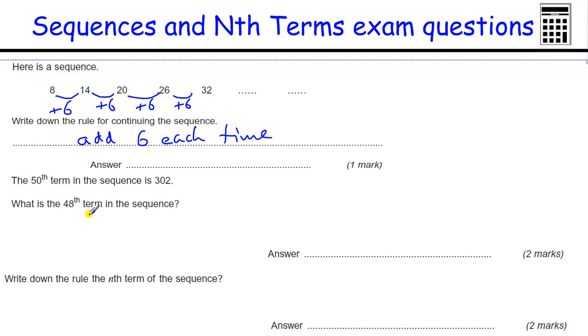The fiftieth term of the sequence is 302. What's the forty-eighth term of the sequence? Well, if I'm starting at 302, each time I'm adding six. So what must I add six to to make 302? That's the same as taking away six to get 296. Take another six off. That's 290. And this is the fiftieth, so this is the forty-ninth, and this is going to be my forty-eighth term. So the forty-eighth term equals 290.